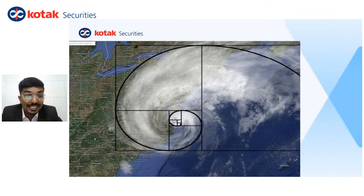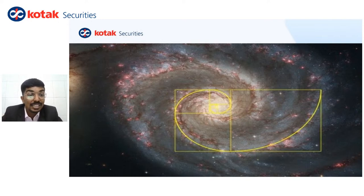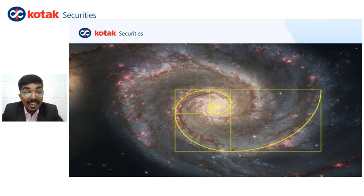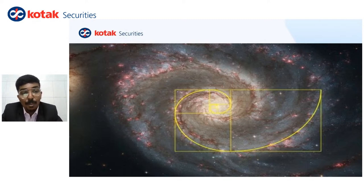It is not just restricted to the hurricane — it is also our galaxy, the Milky Way. Even that is as per the proportions of the Fibonacci spiral. So we are governed by Fibonacci numbers, and our nature is governed by Fibonacci numbers. But the main question is: what use can these numbers be for us in the commodity markets?